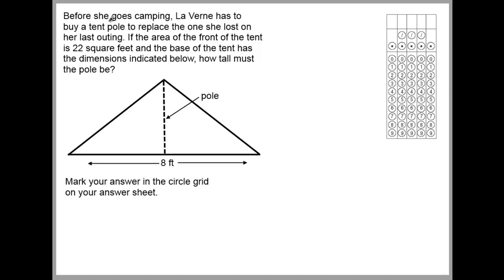Before she goes camping, Laverne has to buy a tent pole to replace the one she lost on her last outing. If the area of the front of the tent is 22 square feet and the base of the tent has the dimensions indicated below, how tall must the pole be?